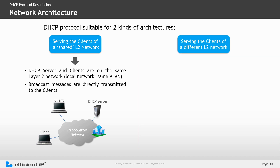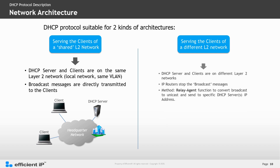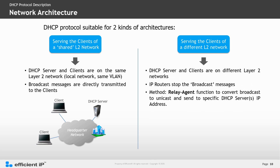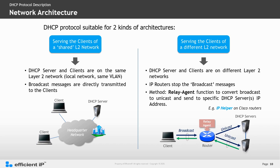The second architecture is where clients are on a different L2 network from the DHCP server. In this case, an IP router separates the networks and will stop broadcast messages. However, there is a method used on servers or routers called the relay agent function, which converts broadcast messages to unicast and sends them to the configured DHCP server. For example, this would be an IP helper configuration on a Cisco router, which is how a client can obtain its IP address when the DHCP server is on a different network.